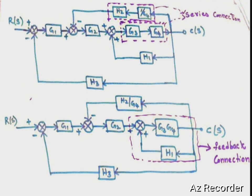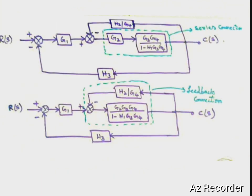Now the dotted line in the block diagram shows a feedback connection. Applying the feedback formula G/(1 ± GH) — since the feedback connection sign is positive, we use the minus symbol, giving G/(1 − GH). So the result is G3·G4 divided by (1 − H1·G3·G4), and this feedback loop is now converted into a single block.